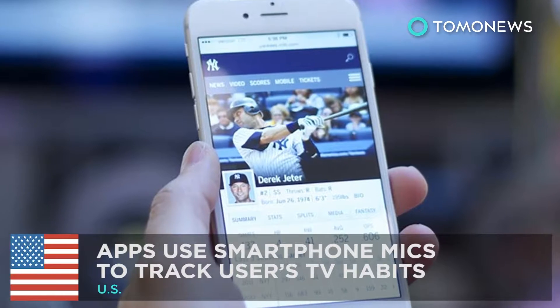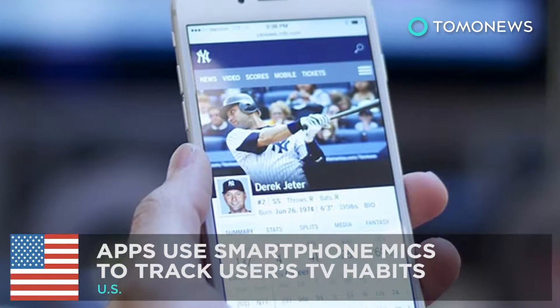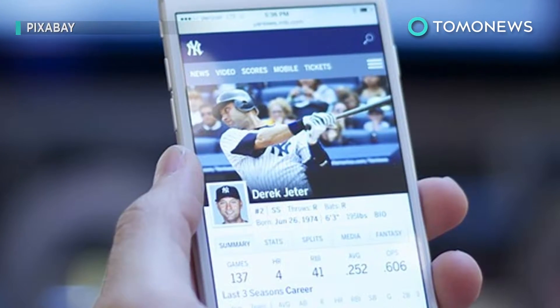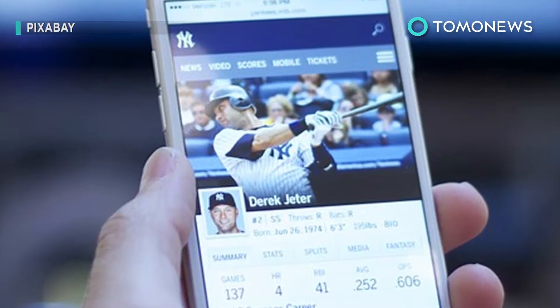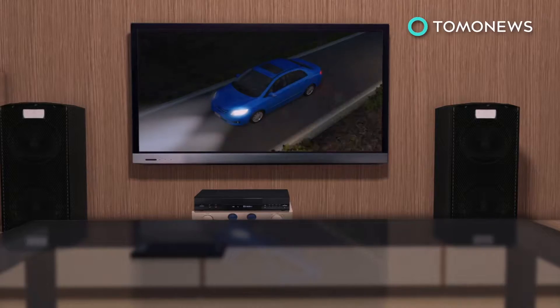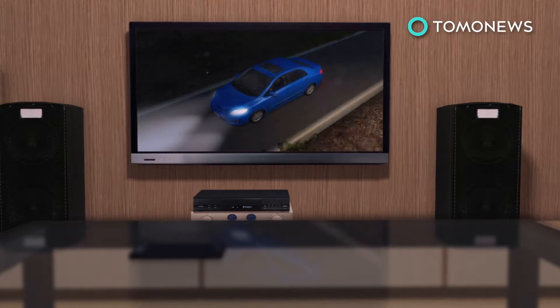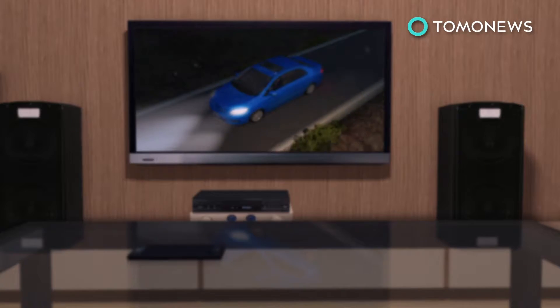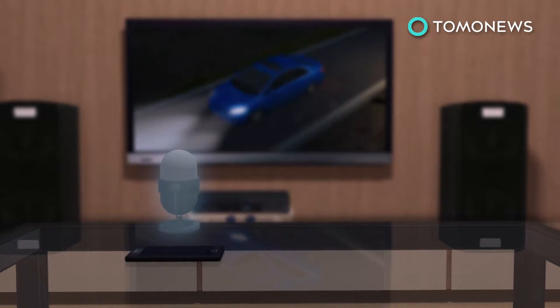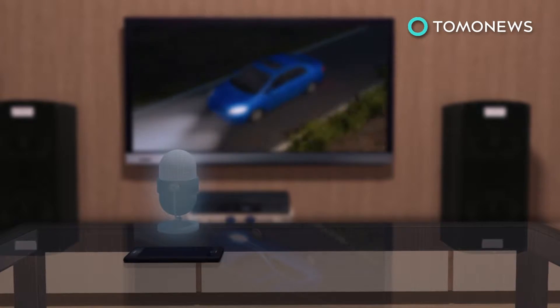Some apps might be tracking what you watch on TV. Hundreds of smartphone apps could be tracking their users' television viewing habits. Via a device's microphone, many apps reportedly use advanced automated content recognition software by company Alfonso to listen in on users' television viewing habits.